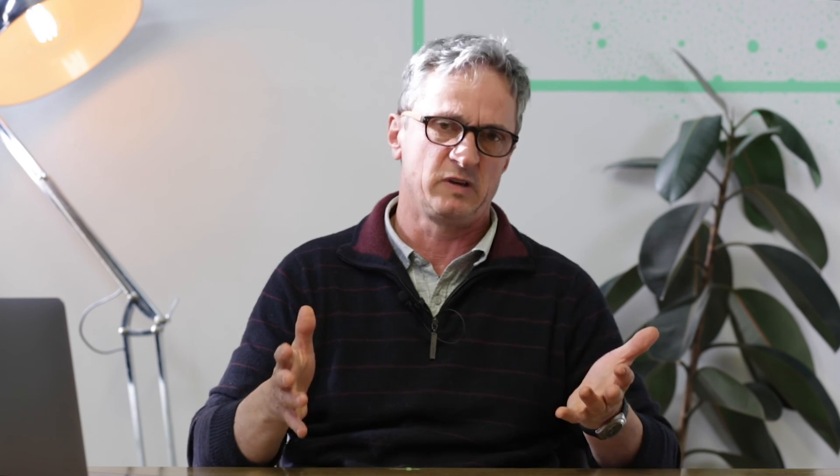You can use the discounted payback period to do away with this disadvantage. The payback period is an interesting measure, but it doesn't take into consideration the time value of money. The discounted payback period effectively adds up the present value income flow of your particular investment. So instead of getting a payback period of three and a bit years, you're looking at a discounted payback period of just under five years, which is much more realistic.